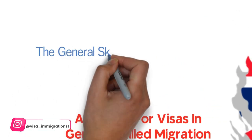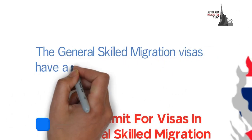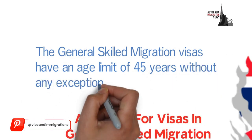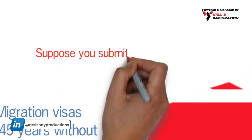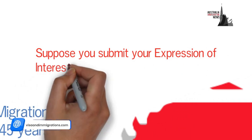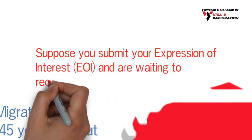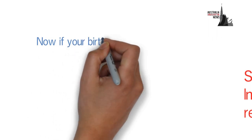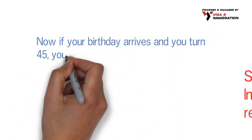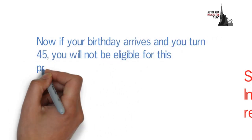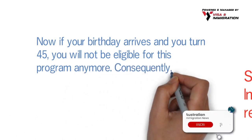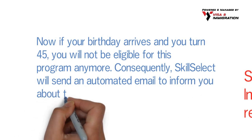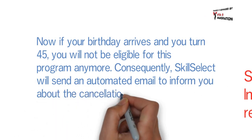The General Skilled Migration visas have an age limit of 45 years without any exceptions. Suppose you submit your Expression of Interest, also known as EOI, and are waiting to receive an invitation. If your birthday arrives and you turn 45, you will no longer be eligible for this program. Consequently, SkillSelect will send an automated email to inform you about the cancellation of your EOI.